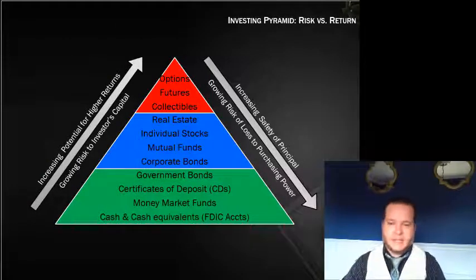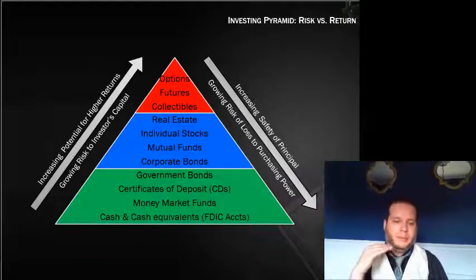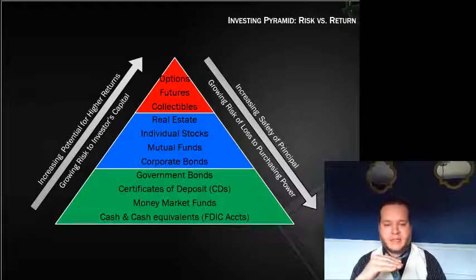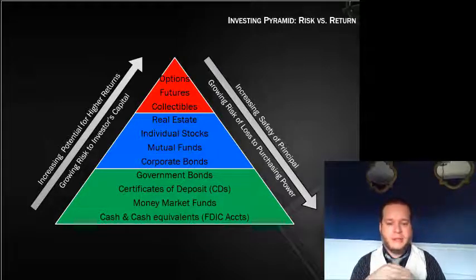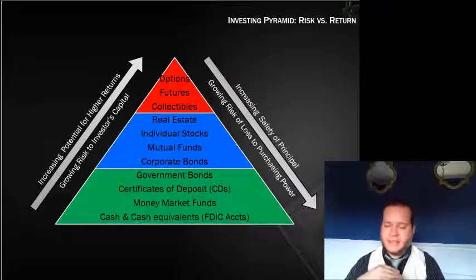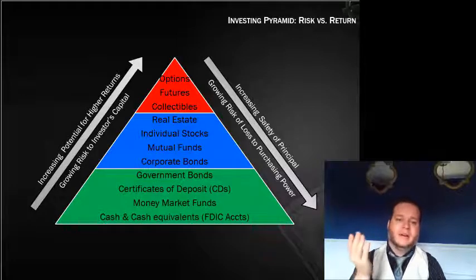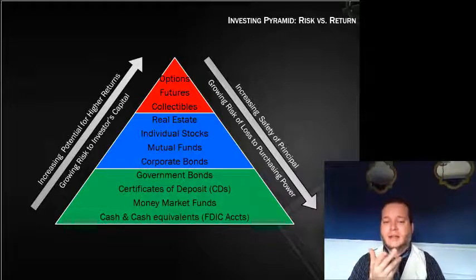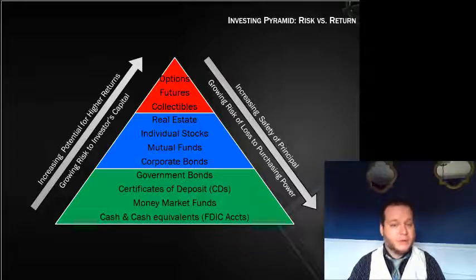Here's the investing pyramid from the readings. At the bottom are cash and cash equivalents — FDIC-insured checking and savings accounts. They're super liquid and super safe, which is why they're at the bottom. As you go up the pyramid, your ability to make more money increases, but so does the risk of losing your money.